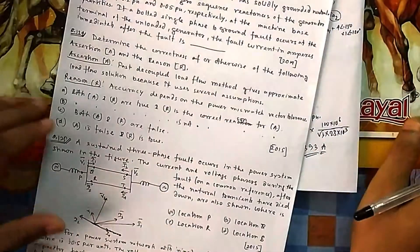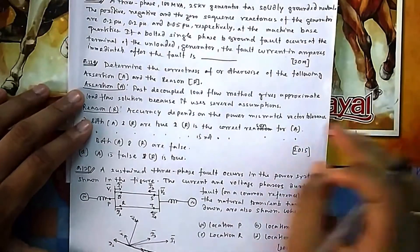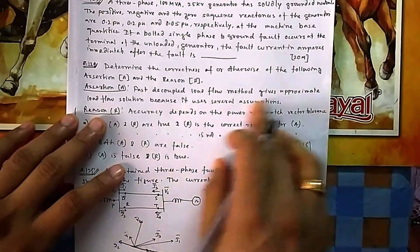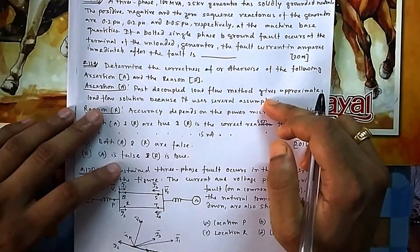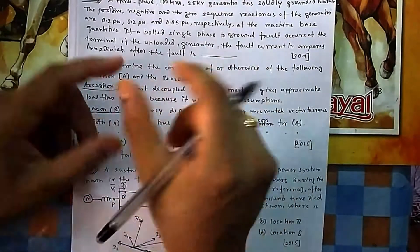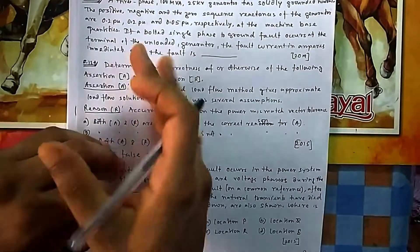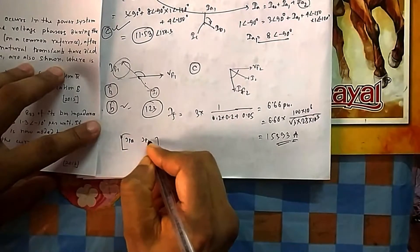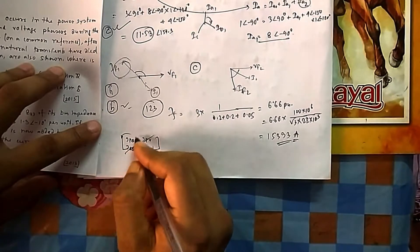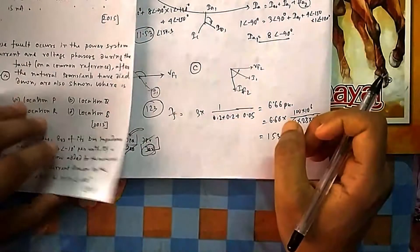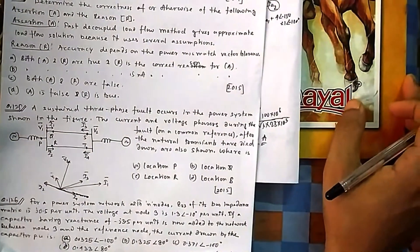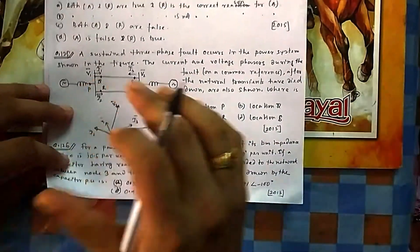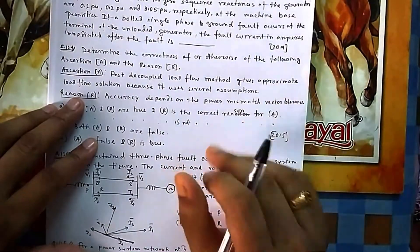Question 124: Determine the correctness of the following assertion and reasoning. Assertion: The Fast Decoupled Load Flow (FDLF) method gives an approximate load flow solution because it uses several assumptions. This is correct — FDLF decouples the Jacobian from Newton-Raphson into P-θ and Q-V couplings, neglecting P-V and Q-θ components. Further approximations are made in computing Y' and Y'' matrices, so the result is indeed approximate. Statement A is correct.